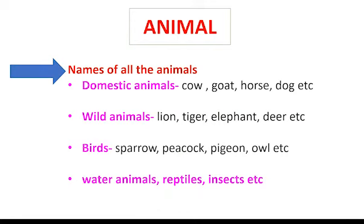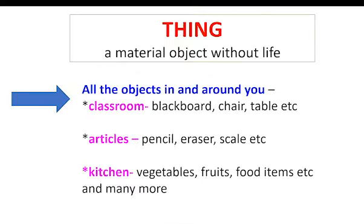Animals means all animals — domestic animals, wild animals, pet animals, water animals, birds, reptiles, insects etc. When I say a thing, it means all the material objects around you like blackboard, chair, chalk, bag, pencil, scale, all kinds of fruits and vegetables, biscuits, chips and many more.